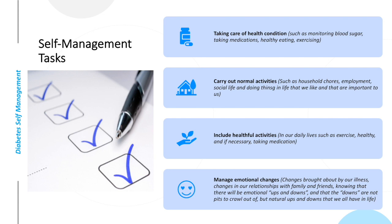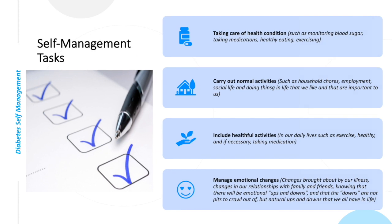Number three: include healthful activities in our daily lives, such as exercise, healthy eating, and if necessary, taking medication. Number four: manage emotional changes — changes brought about by our illness, such as anger, uncertainty about the future, changed expectations and goals, and sometimes depression. Changes can also happen in our relationships with family and friends. Knowing that there will be emotional ups and downs, and that the downs are not pits to crawl out of, but natural ups and downs that we all have in life.